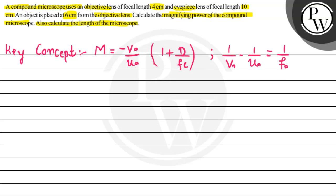First we have to find the magnifying power of the compound microscope, and then we have to find the length. Let's note what is given. The objective lens focal length f-naught is 4 cm. An object is placed at 6 cm from the objective lens, so u-naught equals minus 6 cm — negative because it is on the left side according to sign convention.